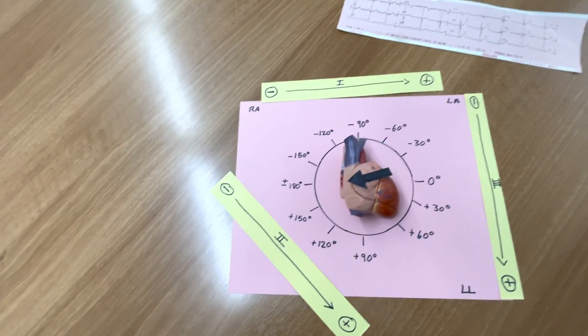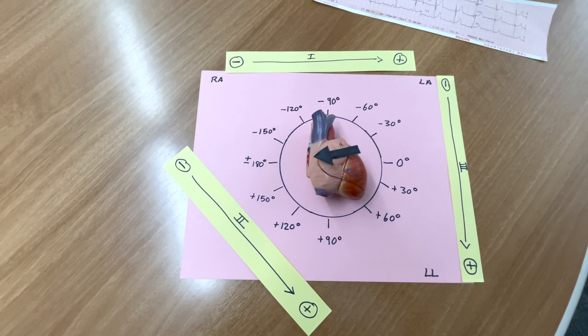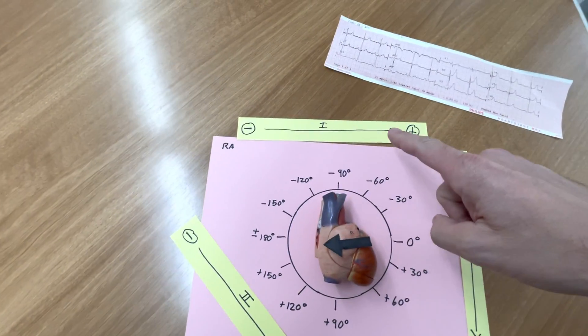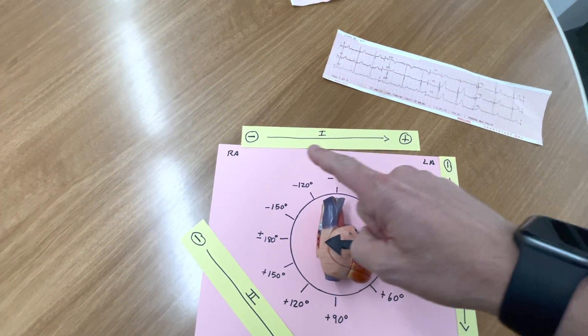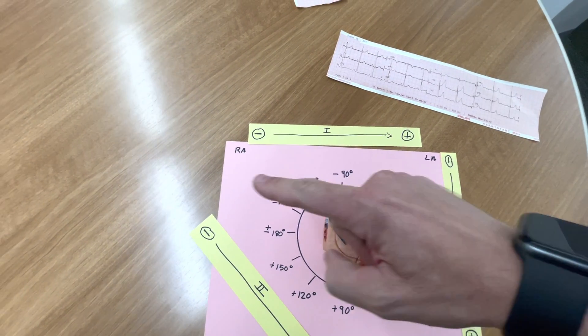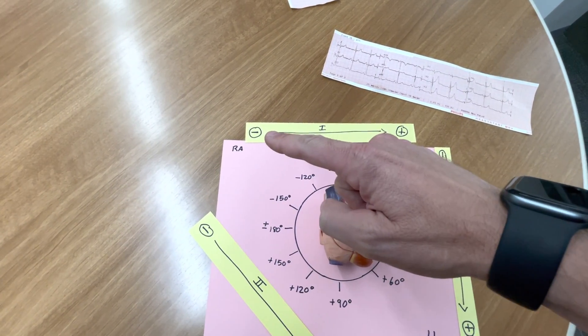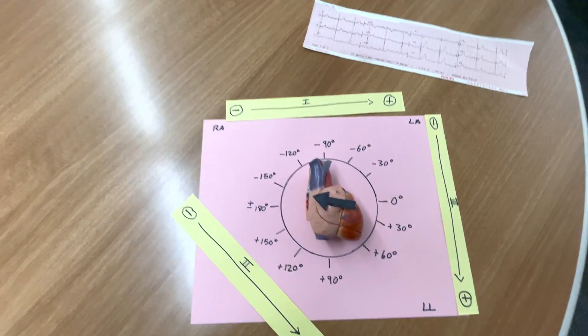Right axis deviation is considered plus 90 to about 180 degrees, in this range here. With right axis deviation, you're going to see that lead one is going to shift downward because that electrical activity is moving toward the negative electrode in lead one.